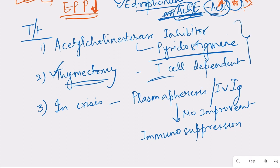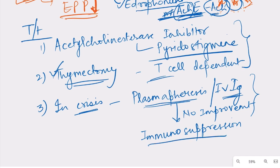In conditions requiring a very fast response — such as a myasthenic crisis where respiratory muscles are involved and respiratory assistance is required — plasmapheresis is done to rapidly remove antibodies from the blood, or intravenous immunoglobulins can be given. The mechanism of IVIG is not fully known, but they also help remove antibodies quickly. If these do not work, immunosuppression by glucocorticoids or other immunosuppressants is required.